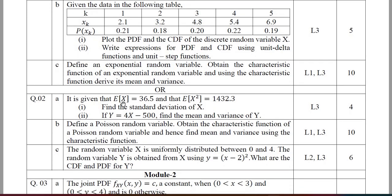Moving on to the optional question, there is a chance of asking expectation of X, expectation of X square, and expectation of Y — problems on expectation. Question 2A gives expectation of X and expectation of X square, and asks you to find sigma X (standard deviation of X). From the given regression line, find the mean and variance of Y. Question 2B asks you to define the Poisson random variable, obtain its characteristic function, and hence find its mean and variance.